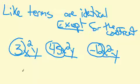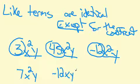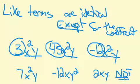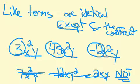But don't get yourself tricked because 7 X squared Y, negative 12 X Y squared, and 2 X Y are not like terms. Because it has to be exactly the same. X squared, and that's an X, and Y, but that's a Y squared. So those are not like terms. They have to be exactly the same X squared and Y.